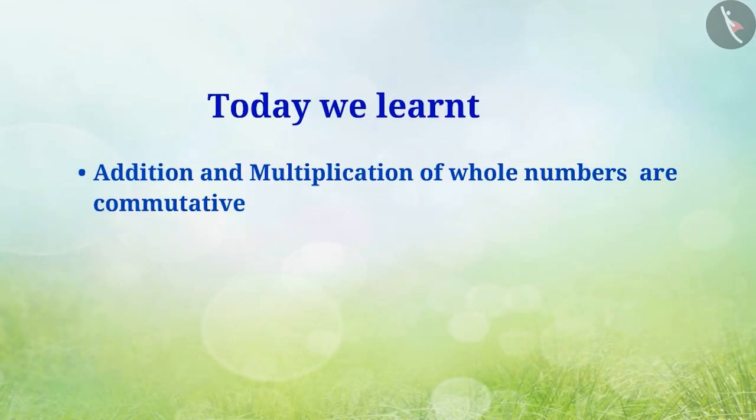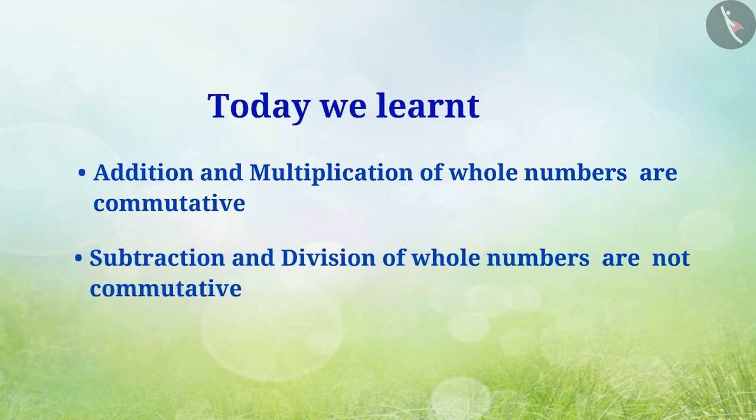Today we learned that addition and multiplication of whole numbers are commutative, whereas subtraction and division of whole numbers are not commutative. In the next video, we shall deal with a few examples related to this property.